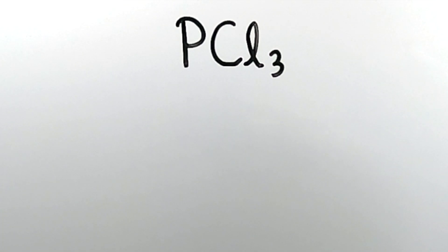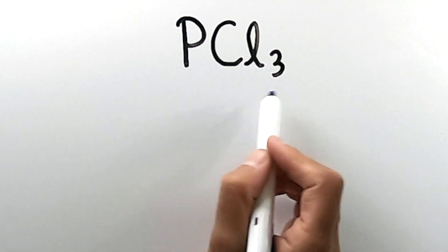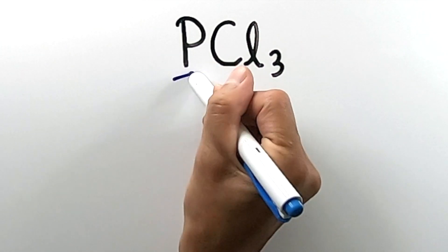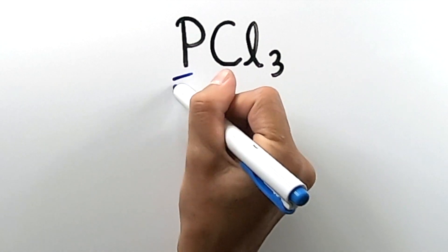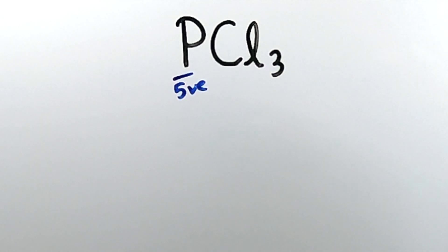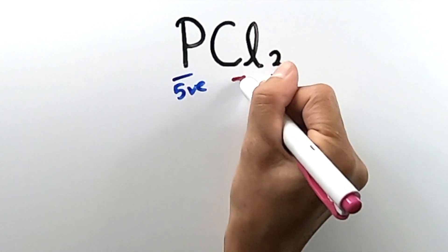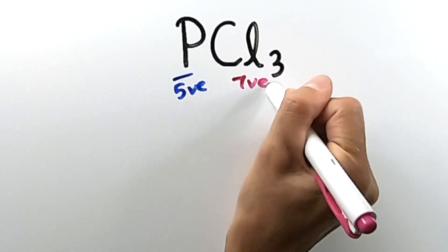I'm going to be showing you two easy and intuitive ways to draw Lewis dot structures. It'll be up to you to decide which one to use. In order to draw Lewis dot structures, we first have to determine the number of valence electrons that surrounds each atom in a compound. Phosphorus atoms have five valence electrons, while chlorine atoms each have seven valence electrons.